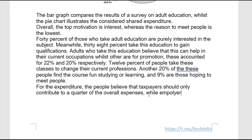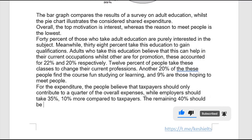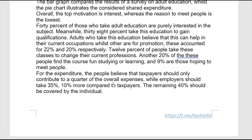While employers should take 35% — that's 10% more compared to taxpayers. As you can see, taxpayers are paying a quarter while employers are paying 35%, which is only 10% more. The remaining 40% — sorry, 30% — should be covered by the individuals. I made a mistake there and fixed it up.